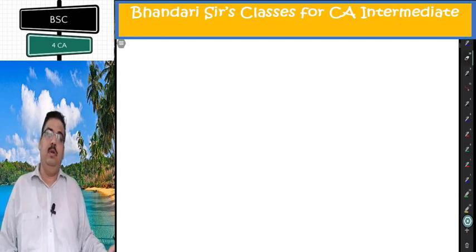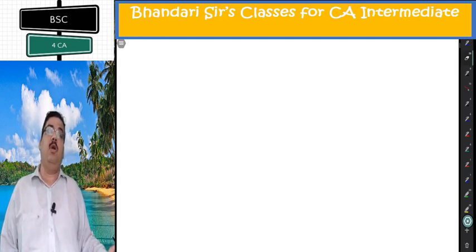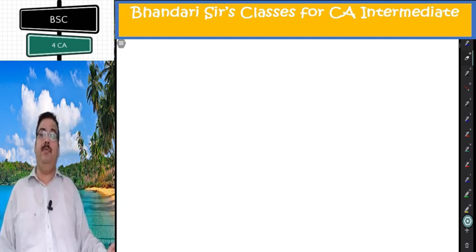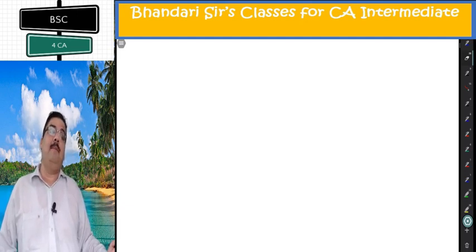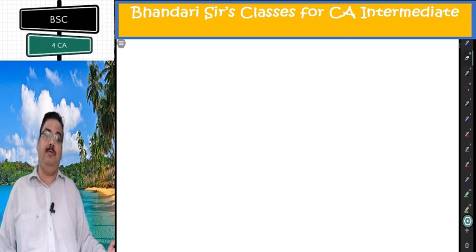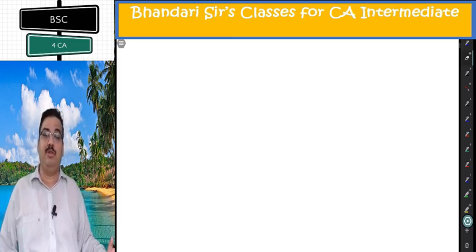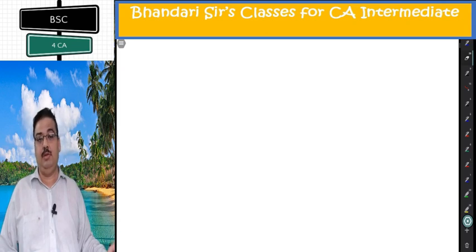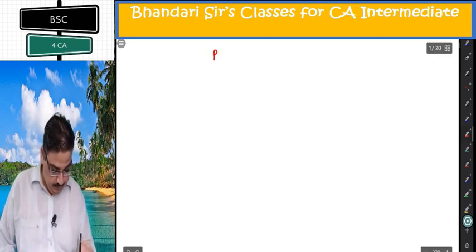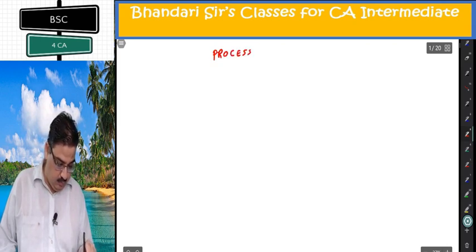Hello friends, today we are starting with another method of costing which is called process costing. You need to understand the industries where this type of method is applicable. Further I will elaborate on the concept of losses and gains — normal loss, abnormal loss, abnormal gain — their treatment, their journal entries, everything which is to be applied in process costing. Today is a day of concepts. You can make a heading: process costing.